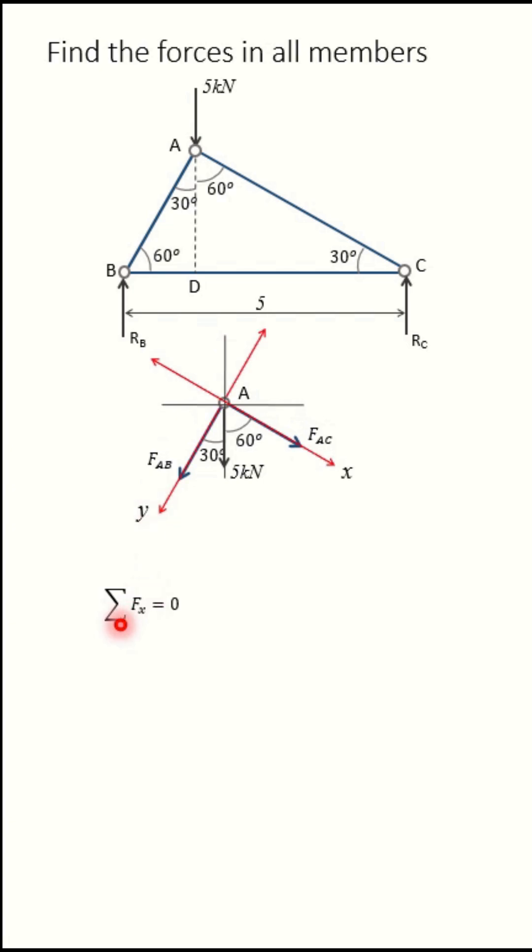Now apply ΣFx = 0. So this is FAC and the component of 5 kilonewtons will be 5cos60. So this value will become FAC + 5cos60 = 0. When you solve this, you will get FAC = -2.5 kilonewtons. Minus sign indicates compression member.